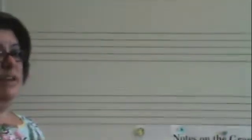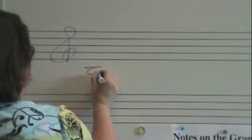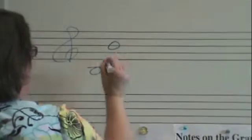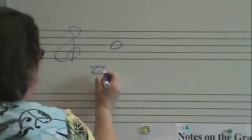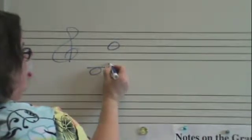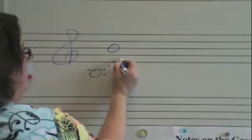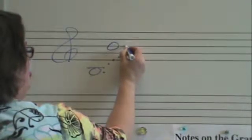Intervals can involve notes that include ledger lines. You still count every line and space. One, two, three, four, five, six, seven, eight.